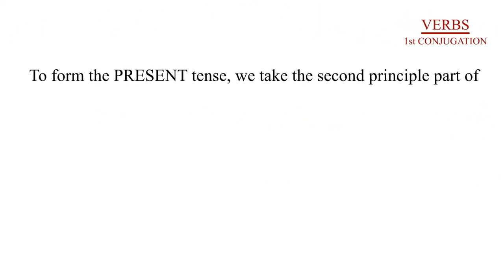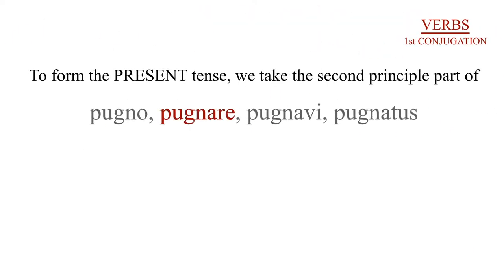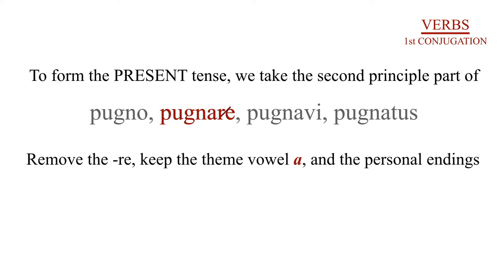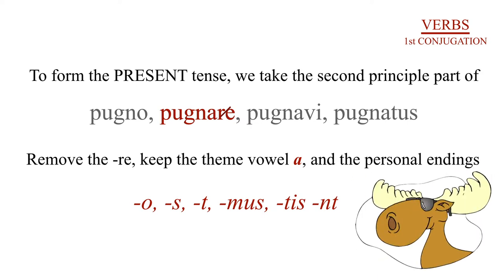To form the present tense, we take the second principal part, pugnare, the infinitive. Remove the -re ending, keeping the theme vowel, a, and add your personal endings: -o, -s, -t, -mus, -tis, -nt. One possible mnemonic device to help you remember this is: o, s, t, mus, tis, nt.